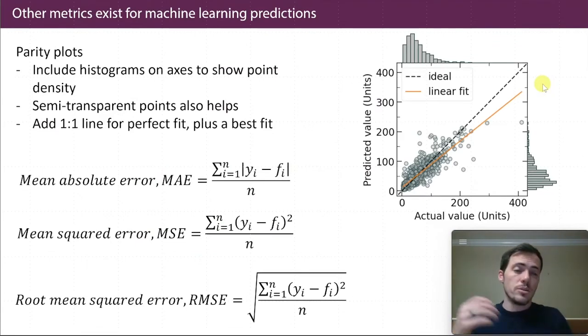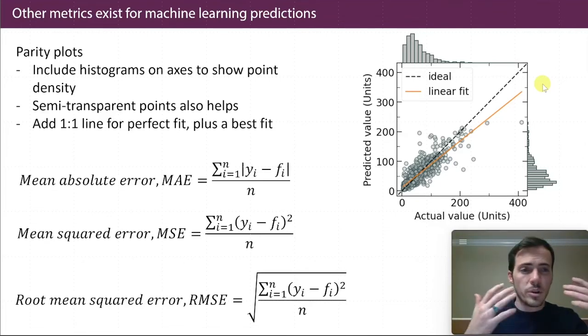Now, in machine learning and materials informatics, there's a couple other metrics which are very commonly reported. First off, when we predict a property, we build a model, we predict something, you almost always see what are called parity plots.